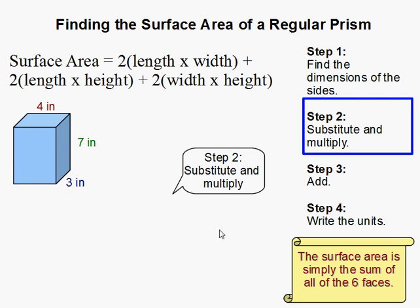Now as you'll notice, at the top I put the general equation of finding the surface area of a regular prism. There's multiple ways to do it, but I think this is one of the easier ways to do it.